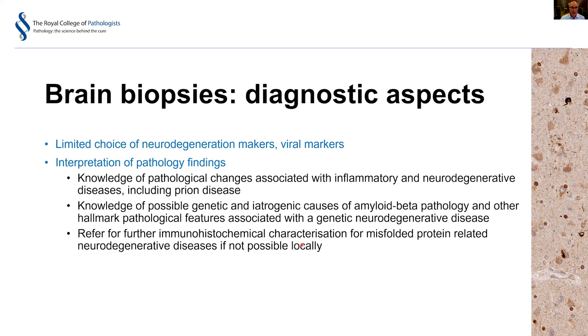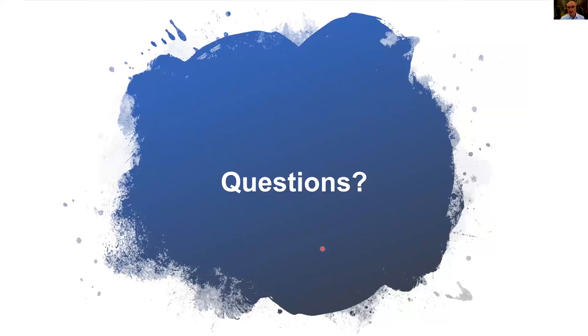Diagnostic limitations include restricted availability of neurodegeneration markers and viral markers in many laboratories. Interpretation requires good knowledge of inflammatory and neurodegenerative diseases including prion disease, and knowledge of genetic and iatrogenic causes of amyloid-beta pathology. If necessary, refer for further immunohistochemical characterization for any type of misfolded protein-related neurodegenerative disease if not possible locally. That ends the presentation, now open for questions.